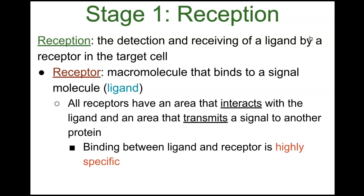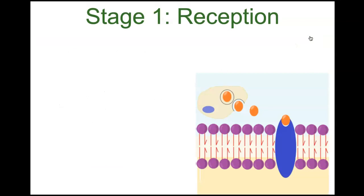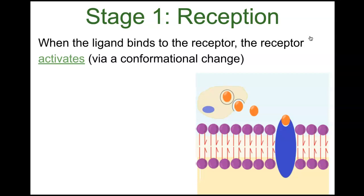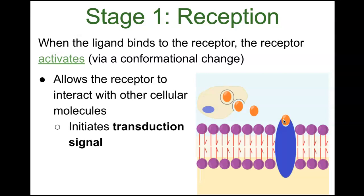The binding between the ligand and receptor is highly specific. When the ligand binds the receptor protein, it starts activation — the receptor undergoes a conformational change, meaning a change in shape or form. This shape change allows the receptor to interact with other cellular molecules and ultimately initiates a transduction signal.